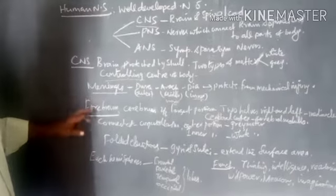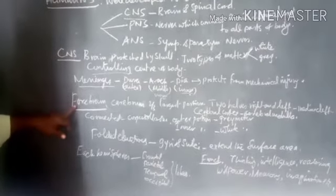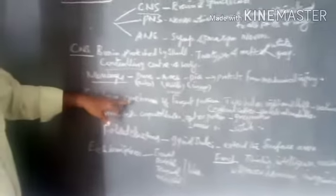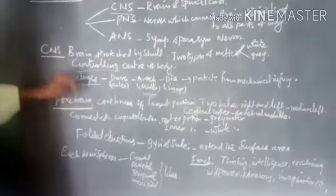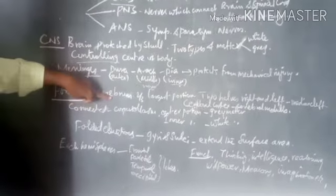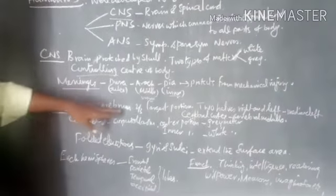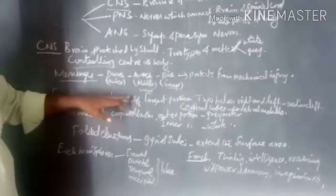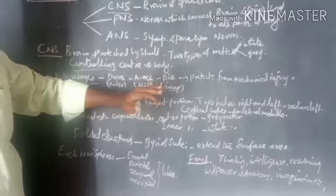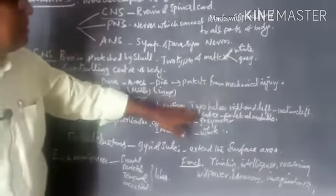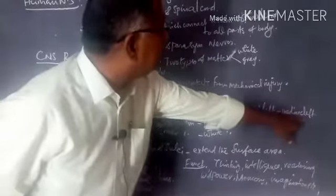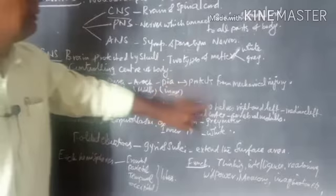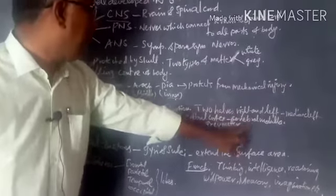The brain is divided into three regions: forebrain, midbrain, and hindbrain. The forebrain consists of the cerebrum, thalamus, and hypothalamus. The cerebrum is the largest part of the brain, occupying two-thirds of it. The right and left halves are divided by a median cleft. The outermost region is the cerebral cortex and the inner region is the cerebral medulla.